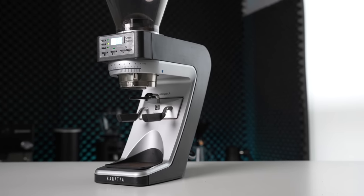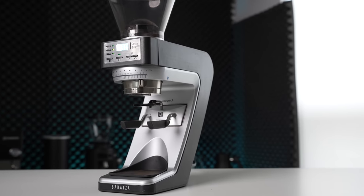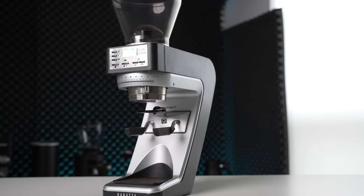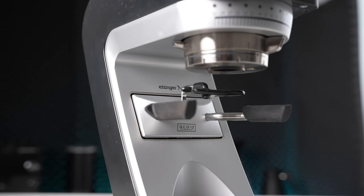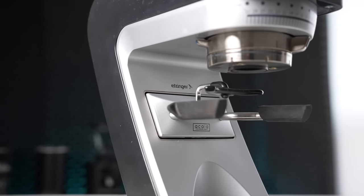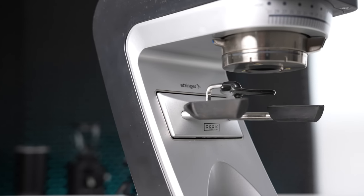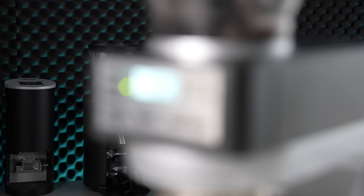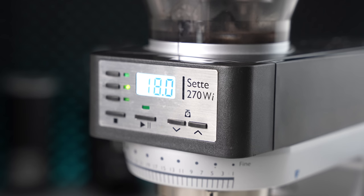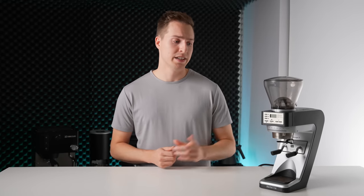And finally, we come to the 270Wi, the top of the range. Instead of relying on a timed grind, the Wi model has a built-in Acaia scale that not only weighs the dose as it's ground, but also intelligently learns when to stop the burrs to get exactly the dose you want, each and every time.